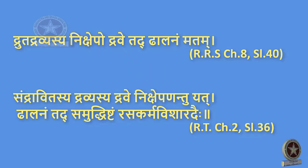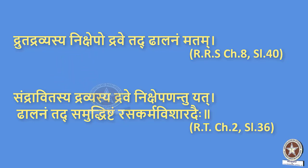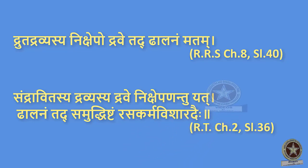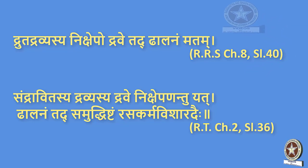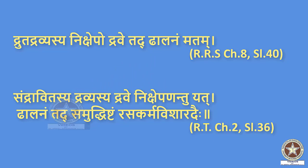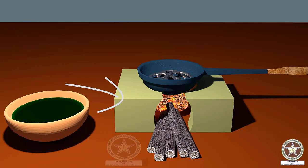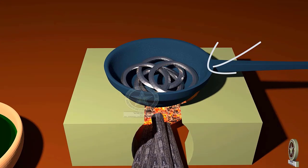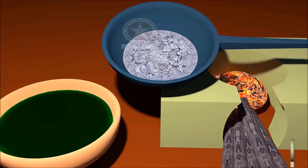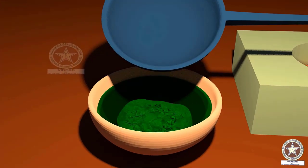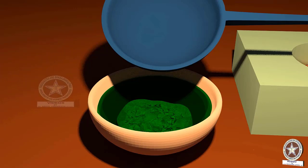'Sandhraavitasya Dravyasya Drave Nikshepanantu Yath Dhalanam Tat Samuddhishtam Rasakarma Visharadaihi.' The metal is heated till it turns to dravasvarupa or molten state, and then dipped in a liquid media. This is called Dhalanam by people expert in Rasashastra. The procedure requires metal, specified liquid media, and a heating apparatus. Metal is taken in a pan or crucible and heated till it melts, then molten metal is poured into the liquid media. This procedure is used as Shodhana for puti lohas.